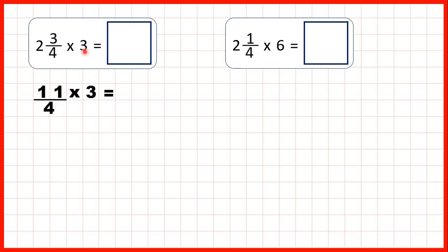Now we're multiplying by 3, but we need to remember that when we multiply a fraction by a whole number, we only multiply the numerator and the denominator stays the same. 11 times 3 is 33 and we still keep the 4 as our denominator. So as an improper fraction our answer is 33 quarters, or 33 over 4.